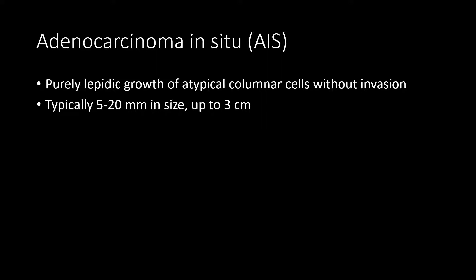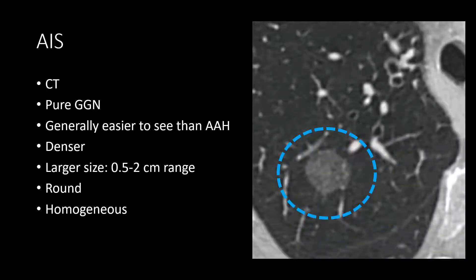Adenocarcinoma in situ, or AIS, is another type of lepidic growth where atypical columnar cells grow without invasion. These are typically five to twenty millimeters in size, though they can measure up to three centimeters. On CT, these are typically pure ground glass nodules — generally easier to see than AAH, a little bit denser, in the half-centimeter to two-centimeter range. They are usually round and fairly homogeneous, as shown in the example.